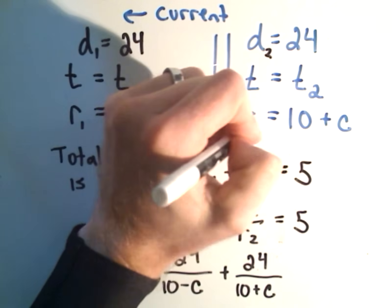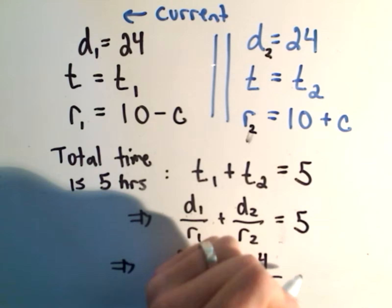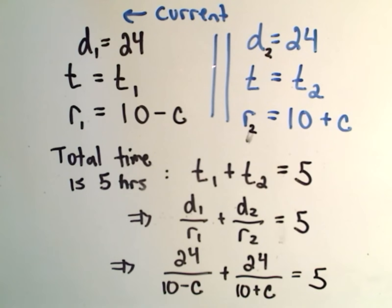R2. Okay, and again, we know that's equal to 5. So our goal in this problem was to find the speed of the current. So all we need to do at this point is solve for C.